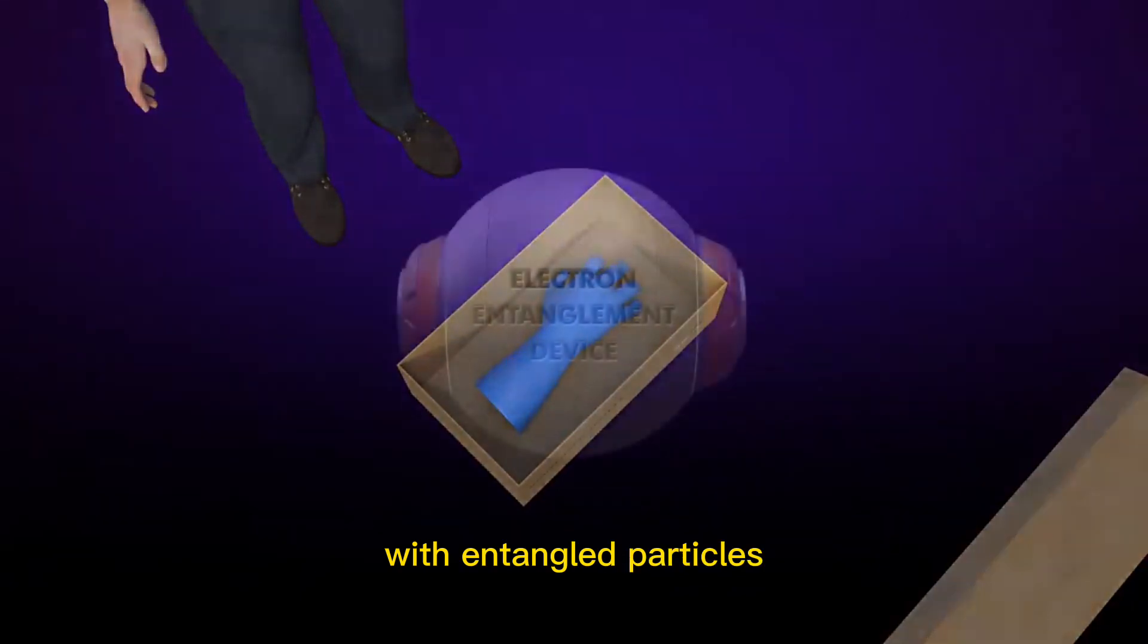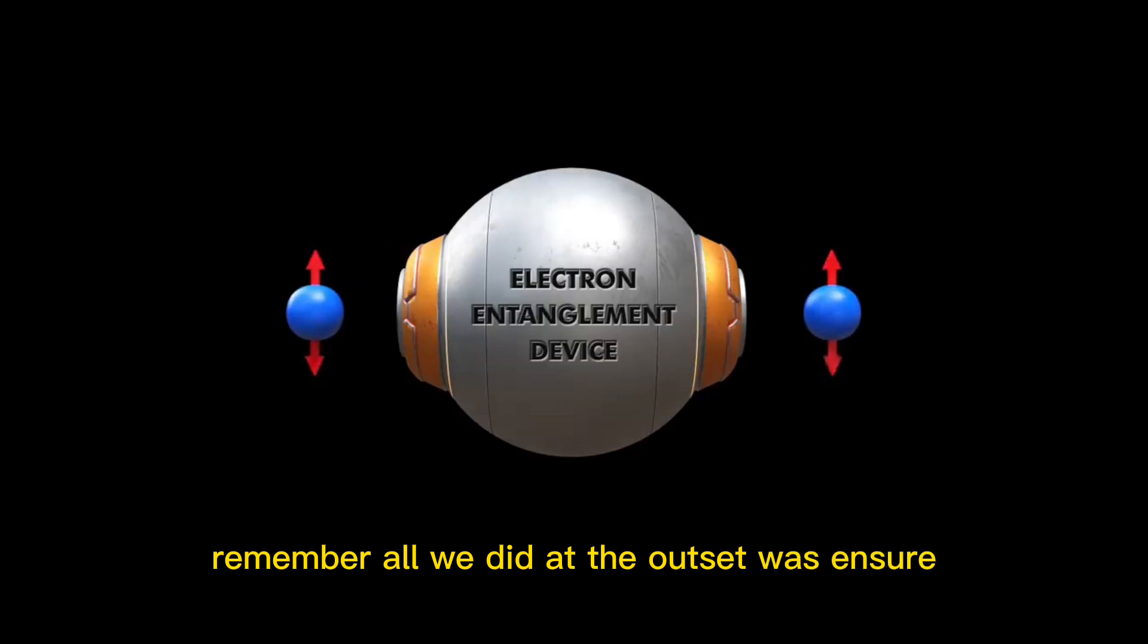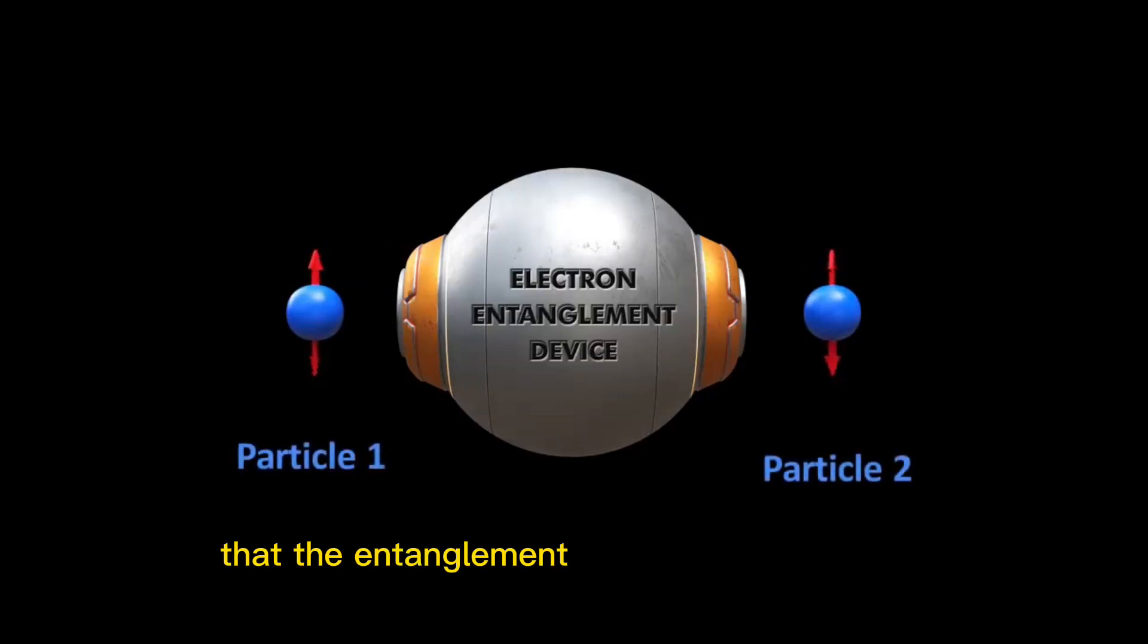With entangled particles, that's not the case. Remember, all we did at the outset was ensure that the entanglement made them correlated so that their spins point in opposite directions. We didn't specify whether the spin up electron is number one or number two.